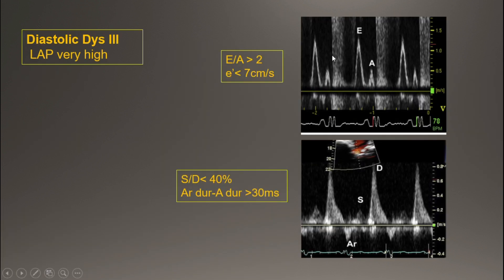The final rule: when E to A is more than 2 and E-prime is less than 7 cm/s, the patient has diastolic dysfunction type 3 with very high left atrial pressure. Alternatively, in patients with other findings of diastolic dysfunction, if S to D ratio is less than 40%, or if AR duration minus A duration is more than 30 ms, this indicates diastolic dysfunction type 3.